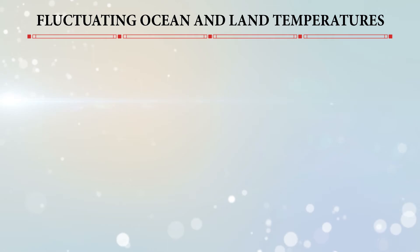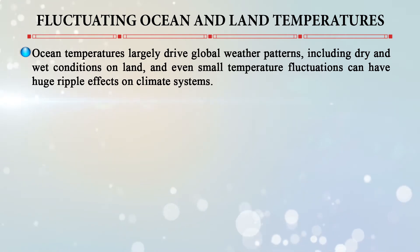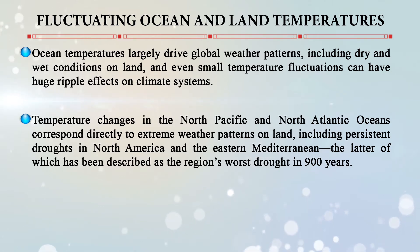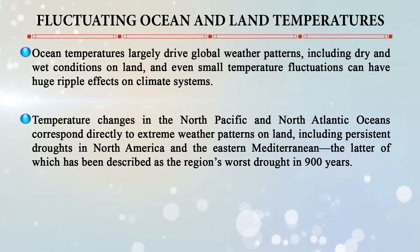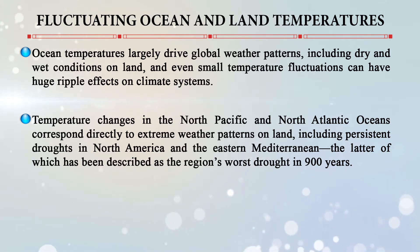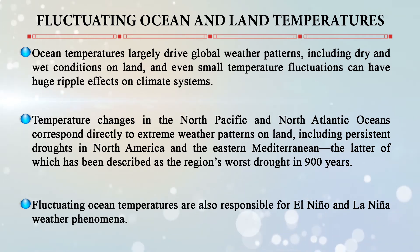The causes of drought include both natural and anthropogenic factors. Natural causes are triggered by cyclical weather patterns involving moisture and heat in the air, land, and sea. Fluctuating ocean and land temperatures largely drive global weather patterns — even small temperature fluctuations can have huge ripple effects on climate systems. Temperature changes in the North Pacific and North Atlantic oceans correspond directly to extreme weather including persistent droughts in North America and the eastern Mediterranean, the latter described as the region's worst drought in 900 years. Fluctuating ocean temperatures also drive El Niño and La Niña phenomena.